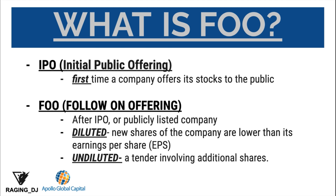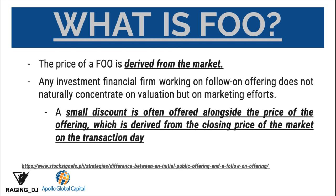The FOO has two types: the diluted as well as the undiluted. In diluted, new shares of the company lower its earnings per share. Undiluted involves additional shares of the company. The price of FOO is derived from the market. Any investment financial firm working on the follow-on offering does not naturally concentrate on valuation but on marketing efforts. A small discount is often offered alongside the price of the offering, which is derived from the closing price of the market on the transaction day.